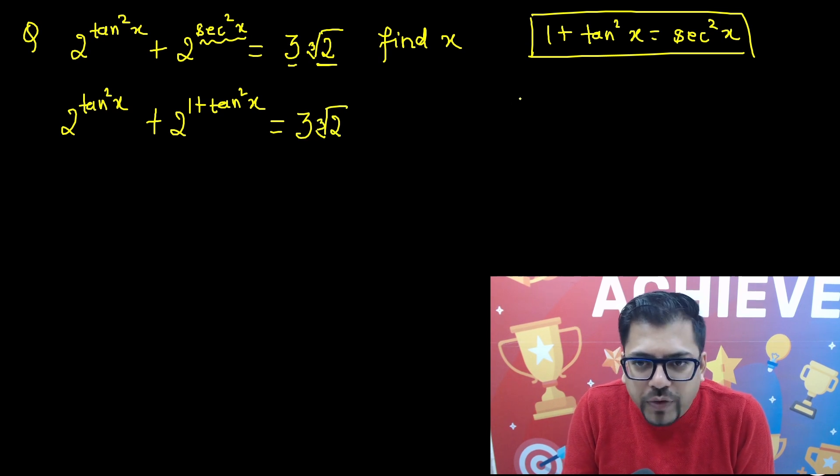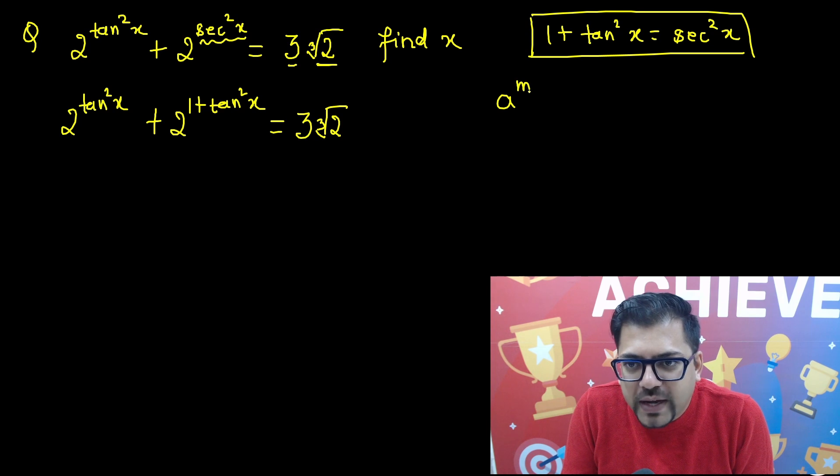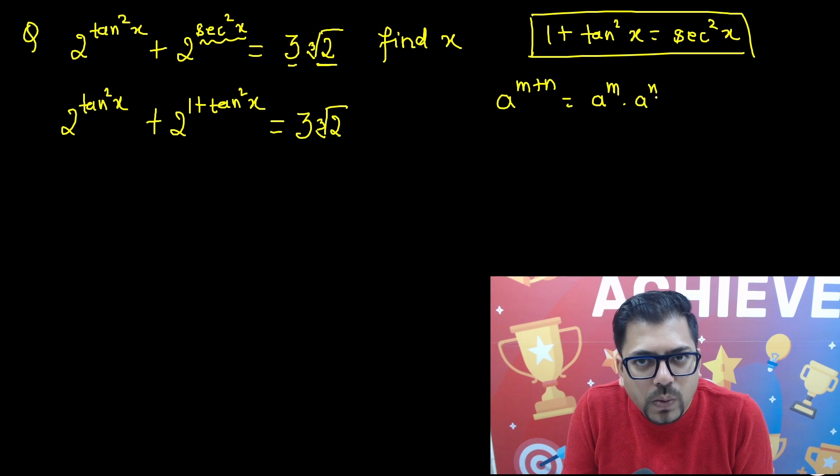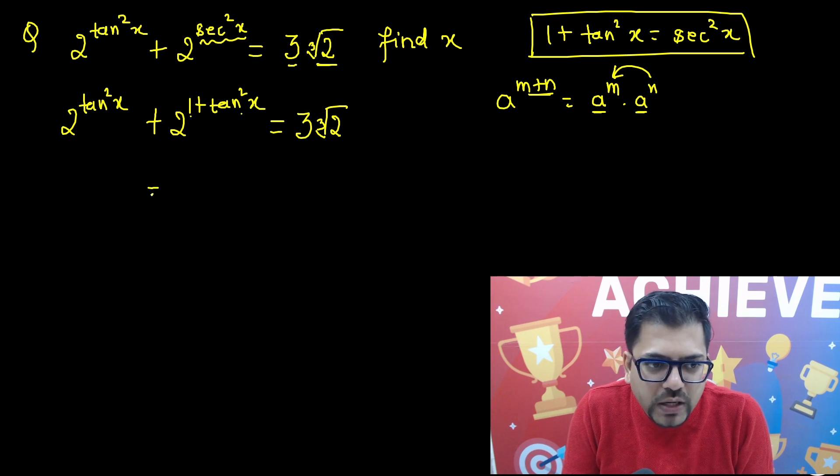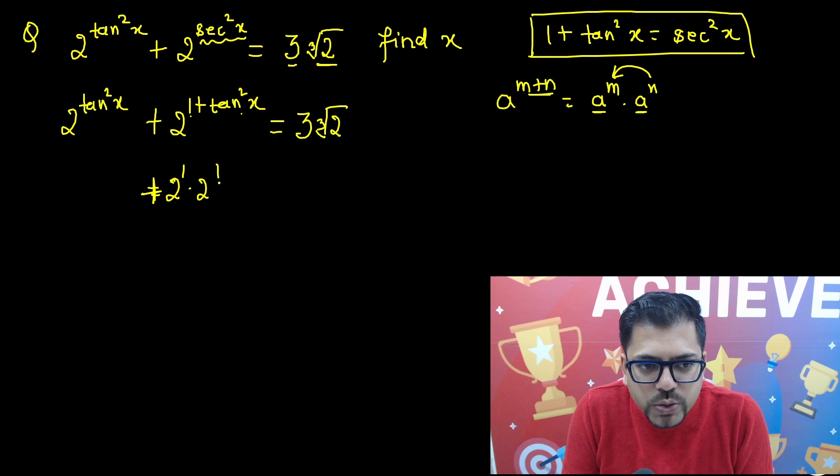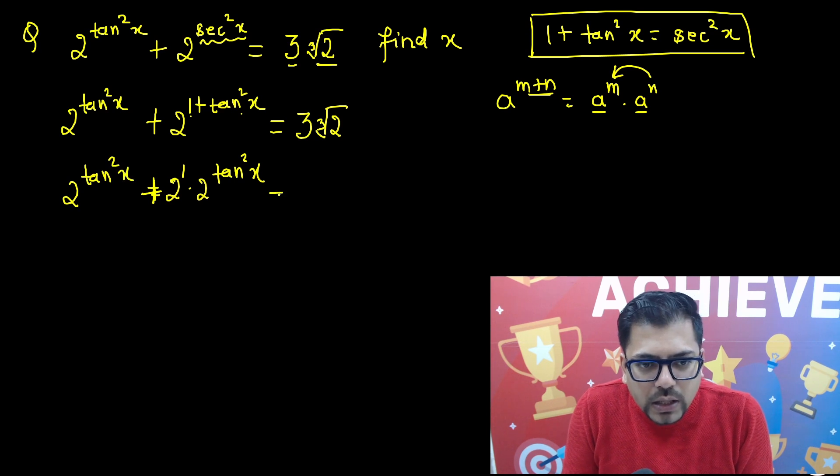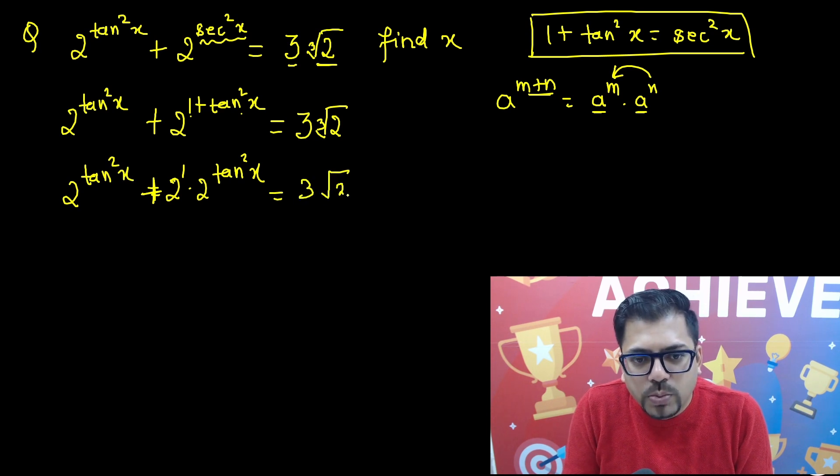Now we know from a formula that a raised to power m plus n is a raised to power m into a raised to power n. Why? Because if you have the same base, the power gets added. And that's why this addition. So here we have an addition. So we'll write this is, sorry, this is 2 raised to power 1 into 2 raised to power tan square x. And this 2 times tan square x is as it is. This equals to 3 cube root of 2.